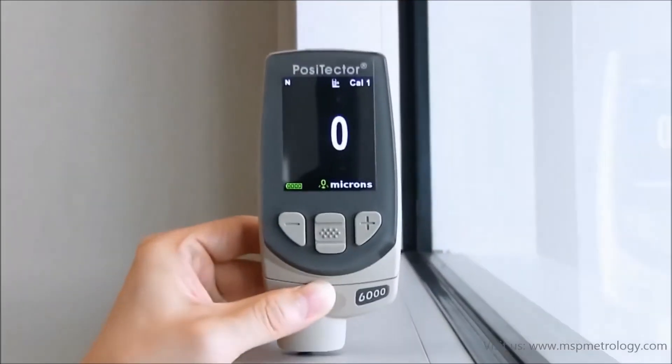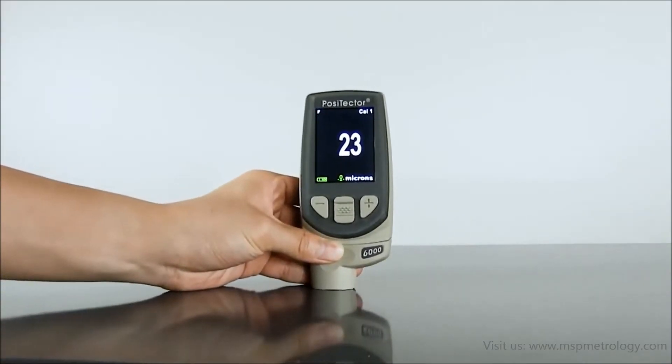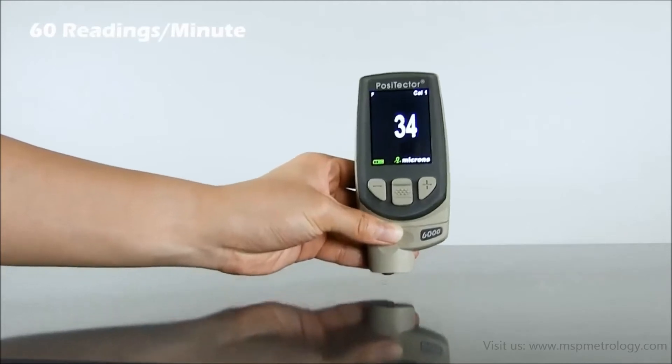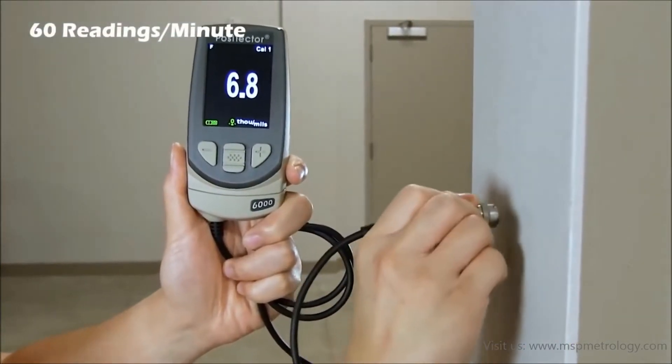The Positector 6000 is the simple, durable, and accurate tool for the job. Positector 6000 probes now take over 60 readings per minute, achieving increased measuring speed without compromising quality, accuracy, or performance.